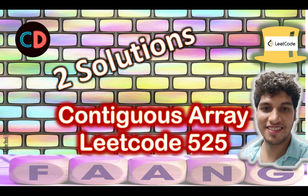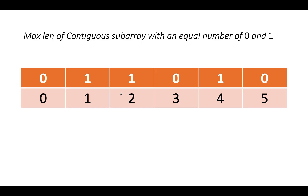Contiguous Array — LeetCode 525. Let's start with the naive approach. We need to identify the length of contiguous subarrays with equal number of 0s and 1s. Let's take a slightly longer example: [0,1,1,0,1,0]. What is the length of the longest contiguous subarray with equal number of 0s and 1s?